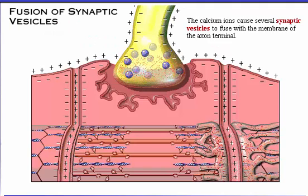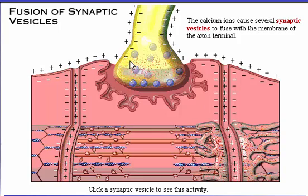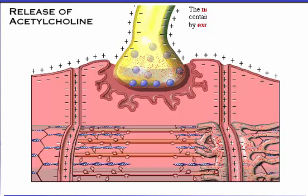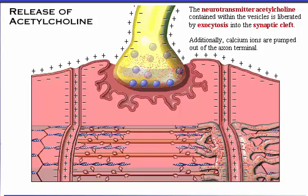The calcium ions cause several synaptic vesicles to fuse with the membrane of the axon terminal. The neurotransmitter acetylcholine contained within the vesicles is liberated by exocytosis into the synaptic cleft. Additionally, calcium ions are pumped out of the axon terminal.